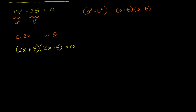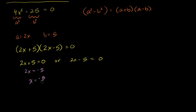This equals 0 if either 2x plus 5 equals 0 or 2x minus 5 equals 0. From the first: subtract 5, get 2x equals negative 5, divide by 2, so x equals negative 5 halves. From the second: add 5, get 2x equals 5, divide by 2, so x equals positive 5 halves. Both solutions satisfy the original equation.